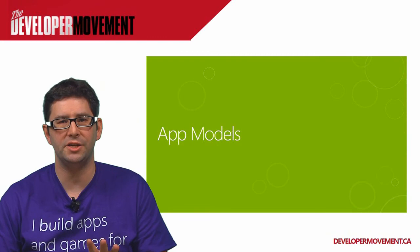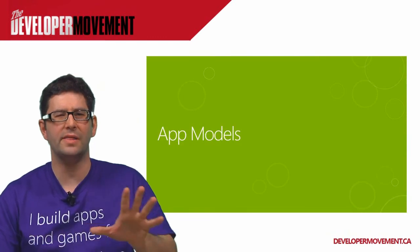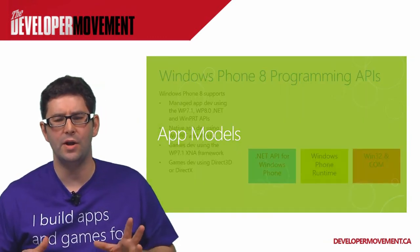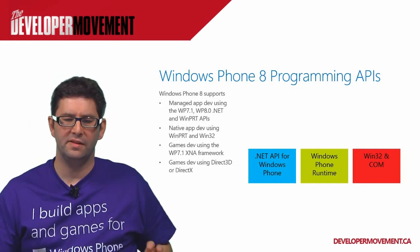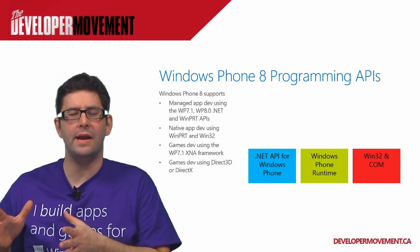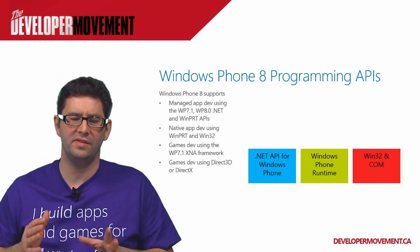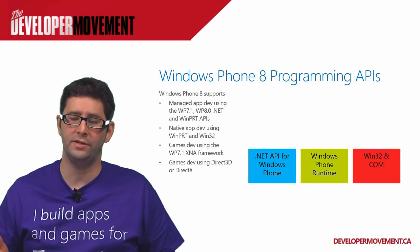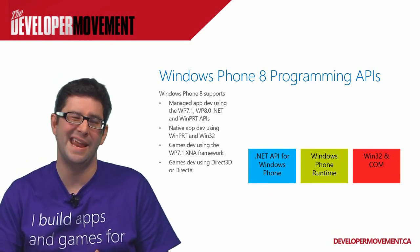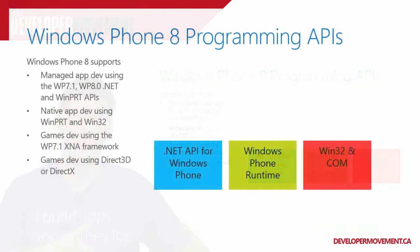Now let's talk about the application model — there are three main ways to build for Windows Phone 8. There's a .NET API, the Windows Phone Runtime, and Win32 which is basically native support. There's also a fourth one for HTML, but we'll deal with that in the third session today.